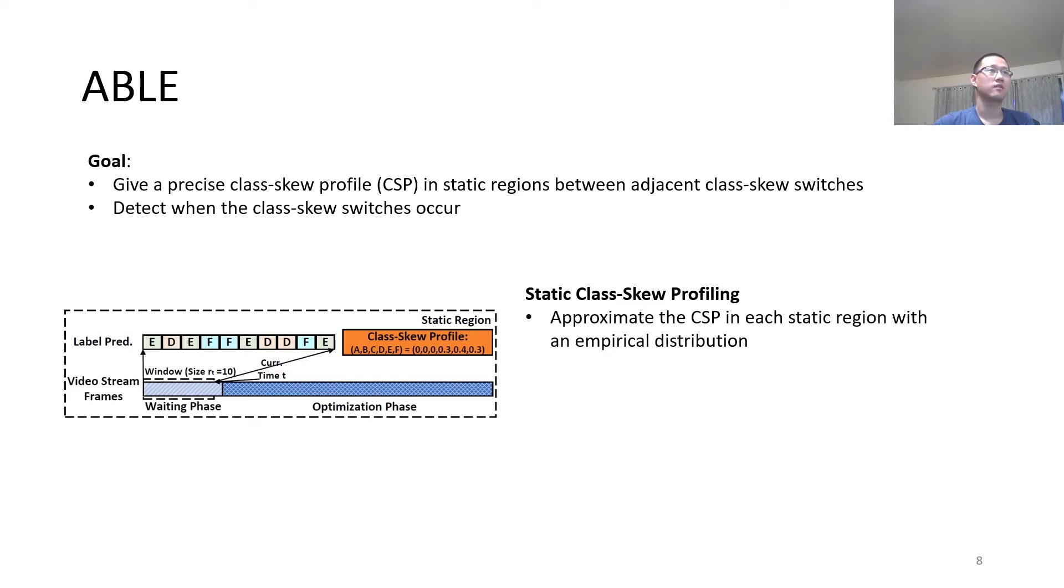In a static class skew profile, we approximate the class skew in each static region with an empirical distribution. For example, suppose we have a sequence of predictions E, D, E, F, and so on. We can count the frequency of each label and compute the class skew profile as the probability of each label. Here, we note that using more predictions for estimation can improve the quality of class skew profile. However, this also takes more time and reduces the benefit from exploiting class skews.